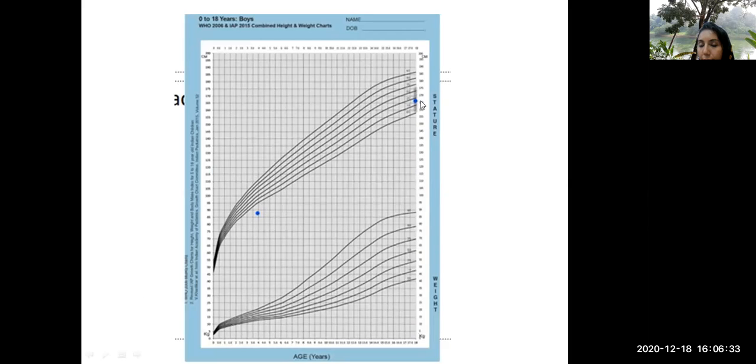So if you observe closely, we will be able to make out the blue dot. When you need to actually plot the target height, even the target height is in the normal range. This shows that even if the child is short initially, child will grow up to be a normal stature adult or normal size adult.